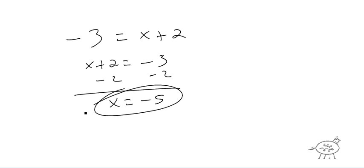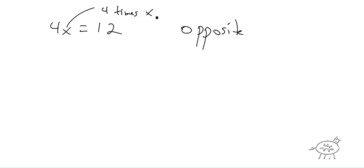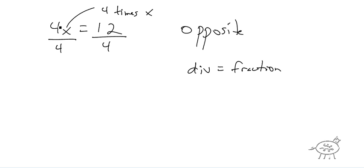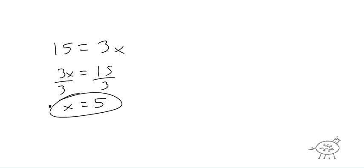Let's do some problems with multiplication and division. If I have 4x equals 12 — remember, you always do the opposite. This is 4 times x, and the opposite of multiplication is division, which is the same as a fraction. So I draw a line underneath each side, that cancels, and I get x equals 12 over 4, which is 3. For 15 equals 3x, flip it around to 3x equals 15, divide both sides by 3, and x equals 5.